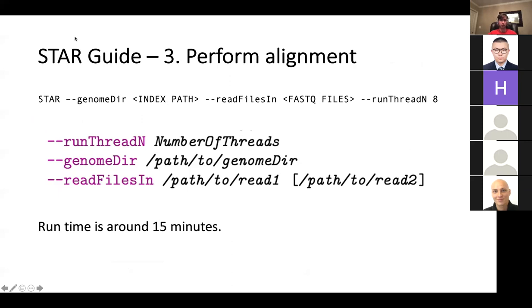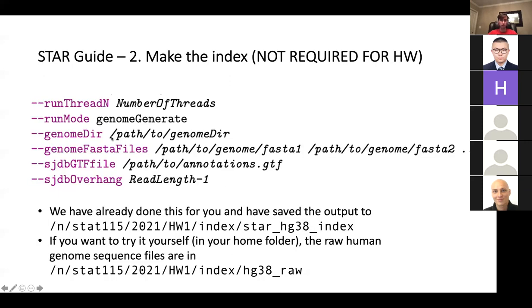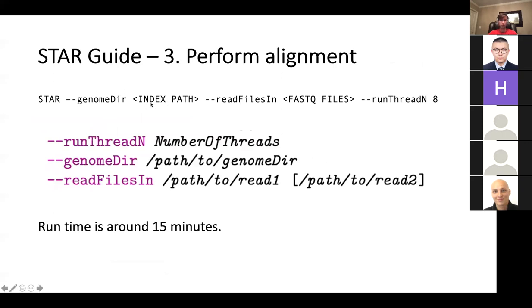The required step is to perform the alignment. The basic command looks something like this: you type STAR, then --genomeDir with the index path. The genome directory is the path to the genome index we made, saved at stat115/homework1/STAR/hg38_index. Next, --readFilesIn is where you put your FASTQ files — if it's paired-end and you have two FASTQ files, you can separate them by a space. Finally, --runThreadN: four or eight seems to be a good number for this assignment. I got this to run in around 15 minutes with the resources I asked for.